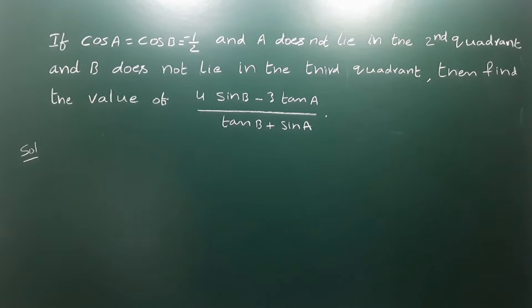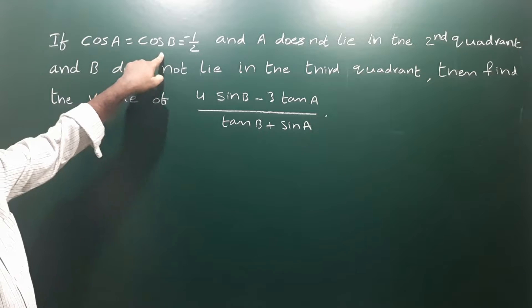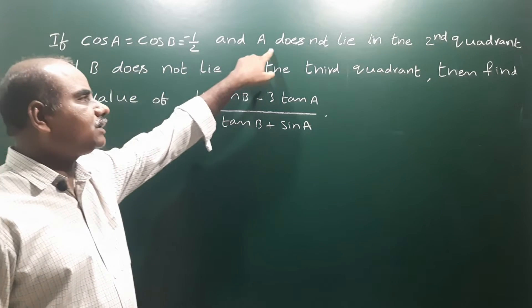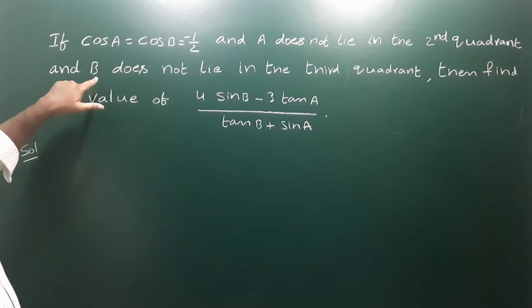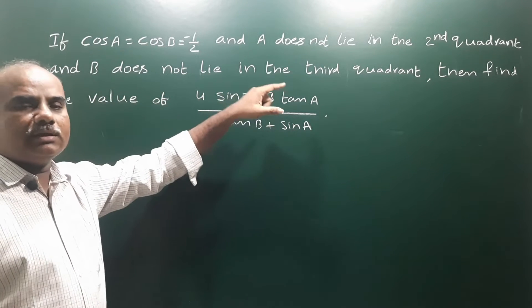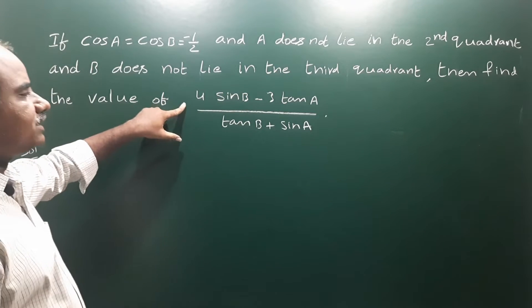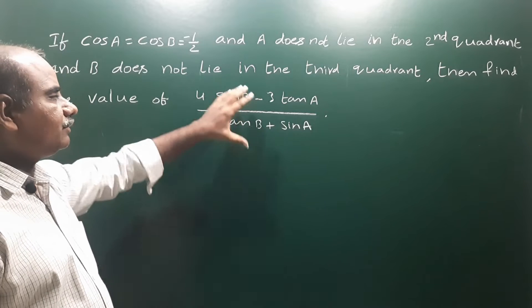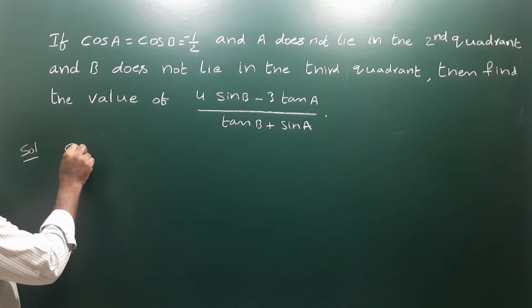Next problem: if cos a is equal to cos b is equal to minus 1 by 2, and a does not lie in the second quadrant, and b does not lie in the third quadrant, then find the value of 4 sin b minus 3 tan a, divided by tan b plus sin a. We have to find this value. So first of all, write the given information.